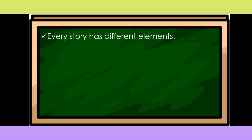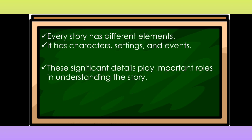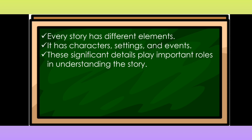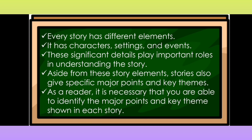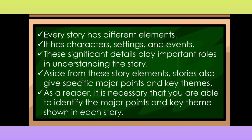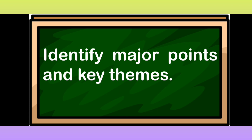Every story has different elements. It has characters, settings, and events. These significant details play important roles in understanding the story. Aside from these story elements, stories also give specific major points and key themes. As a reader, it is necessary that you are able to identify the major points and key themes shown in each story. In this lesson, you are expected to identify major points and key themes.